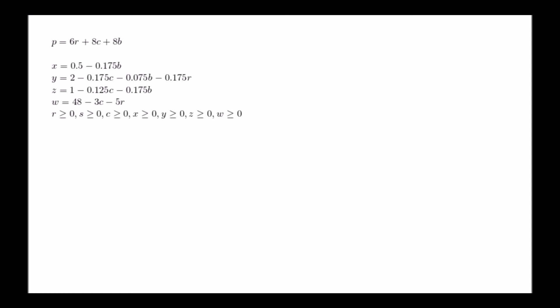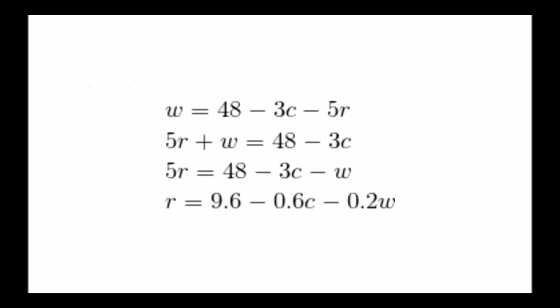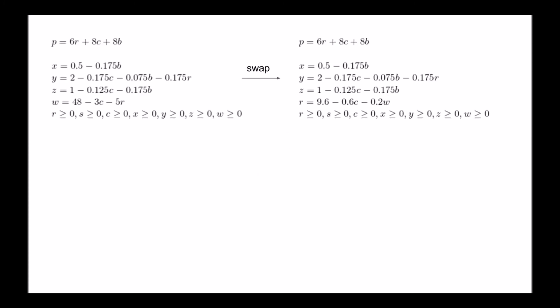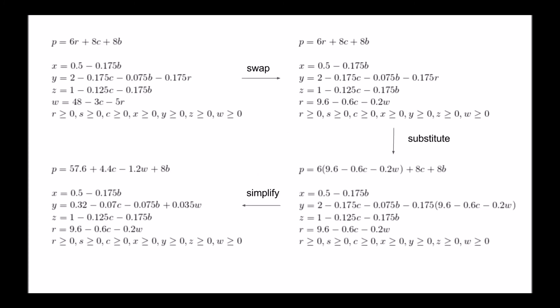Let's begin by selecting r as our pivot. r occurs in equations y and w. In y, r can be at most 11.4 to preserve the non-negativity of y; in w, r can be at most 9.6. Since 9.6 is smaller than 11.4, w is our tightest bound. We therefore rearrange equation w to solve for r: first move r to the left-hand side and w to the right-hand side, then divide through by 5 to get our equation. We then substitute that equation in for every instance of r and simplify.